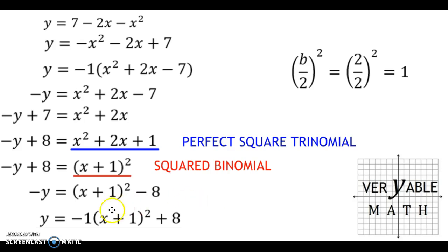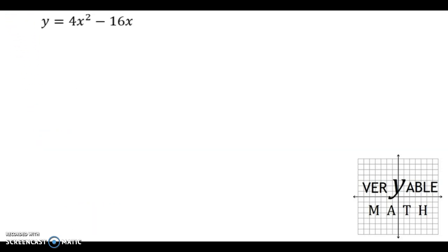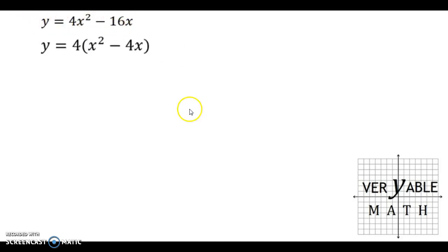Now let's take a look at another situation in which the a value is not equal to 1. For this third example, the a value is 4. There's a b value of negative 16, but there's no c value, which makes our lives a little easier — we don't have to move a c value to the left-hand side. We just have to make sure the a value becomes 1. The easiest way to do that is to factor out the greatest common factor between 4 and negative 16, which is 4. I'm not factoring out an x because I still need the x squared in my quadratic.